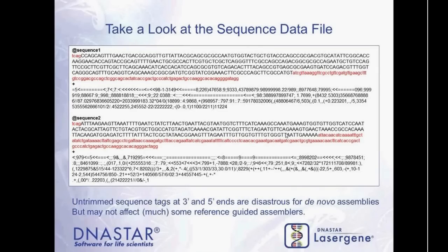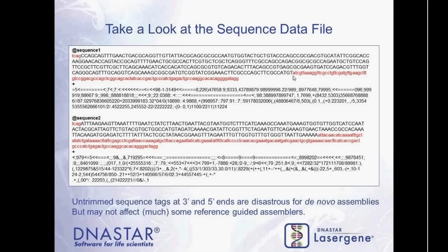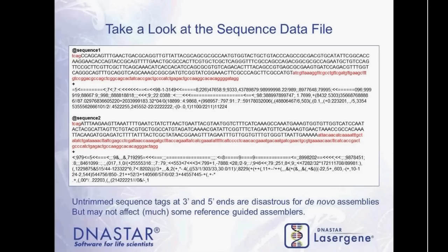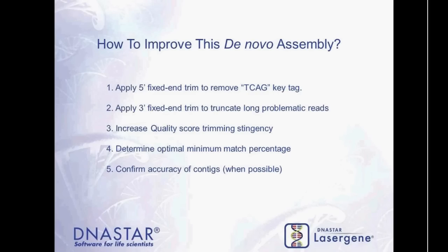One of the first things we do is look inside the data file for anything obvious causing a problem. In this screenshot of the data, there are two sequences. There's a TCAG tag that was left untrimmed - that's one minor problem. There was also a 3' area of lower quality data that wasn't trimmed, and the quality scores were not recognized properly; they were in a different range than expected. This kind of trimming issue is fairly common with different datasets.